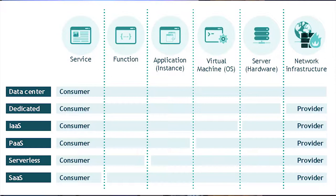But how does it differ from other cloud solutions? To understand that, we have to first take a look at how applications are built. To get a service running, we need functionalities in some functions. Functions are joined together to create an application — an instance of an application running on a virtual machine, which is hosted on a physical server located somewhere in a data center with a network environment around it.